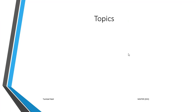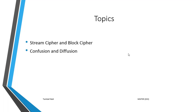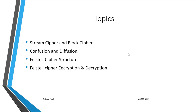In this video lecture we will start with some basic terms such as stream cipher, block cipher, confusion, and diffusion. After that we will discuss the Feistel cipher structure, and the encryption and decryption process in Feistel cipher, and then what factors widely affect the Feistel cipher structure.